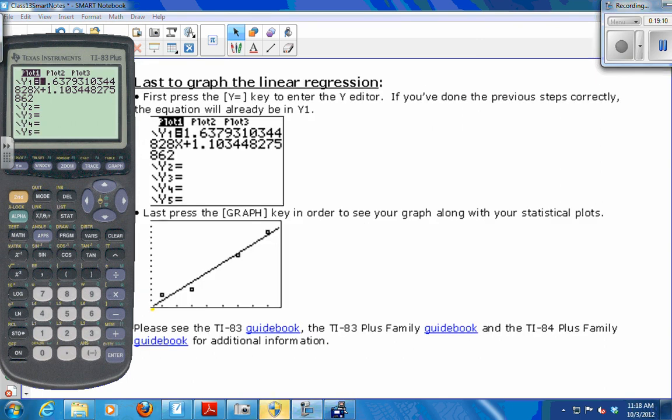So if everything went right so far, the equations in y1, you just press graph. And you get the line over your data points.